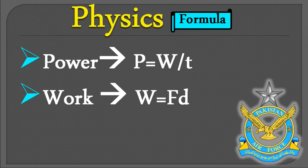Work done کا formula ہے W = F·d، یعنی force اور displacement کا dot product۔ اصل formula W = Fd cosθ ہے لیکن class 9-10 کی books میں W = Fd یا W = Fs use ہوتا ہے، جہاں s بھی displacement یا distance کے لیے use ہوتا ہے۔